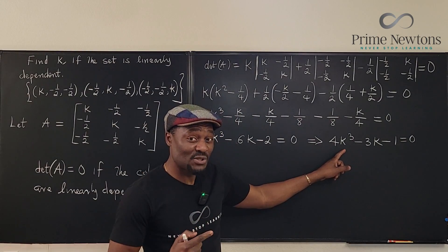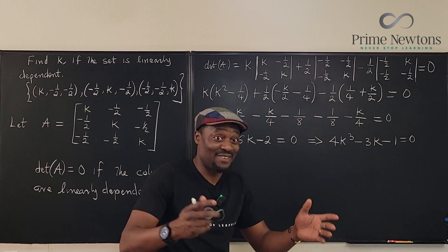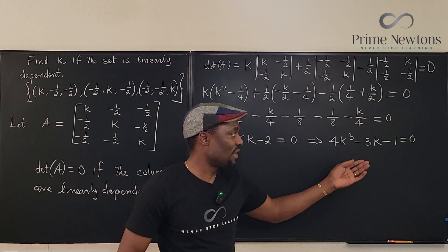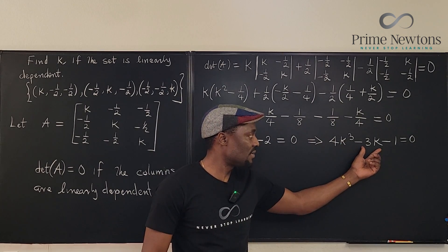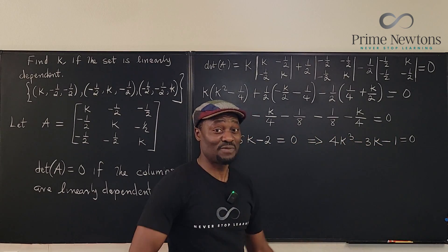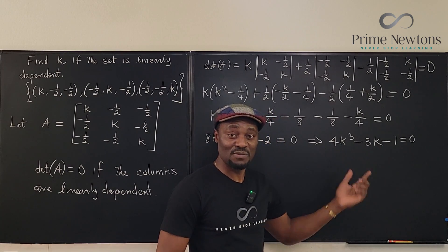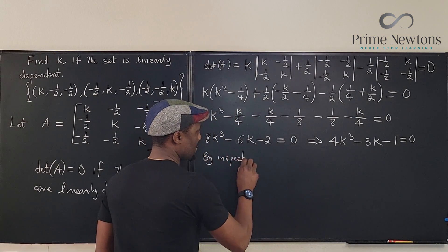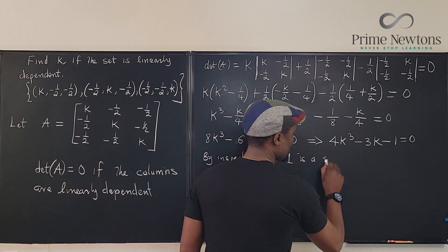Since I don't know the values of k, I'll test numbers using the rational root theorem — for a linear algebra problem like this, k is likely rational. Plugging in k equals one: four minus three minus one equals zero. So k equals one is a root. I just need to find the other ones, so I'll use synthetic division.